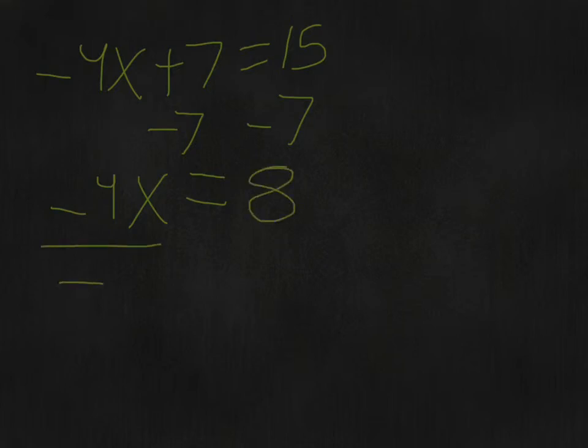And then you divide by -4. Here, a positive divided by a negative is a negative, so you have -2.